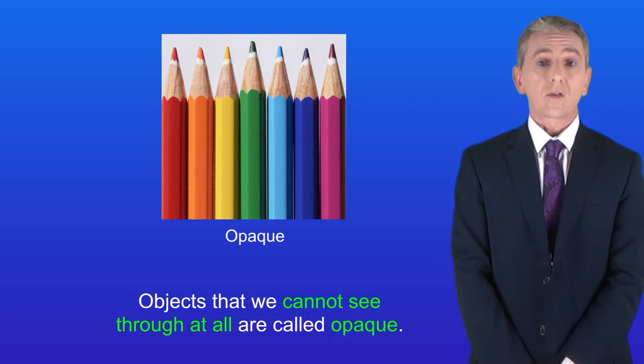Okay, now objects that we cannot see through at all are called opaque. We're going to look now what determines the color of an opaque object.